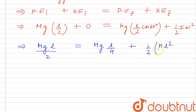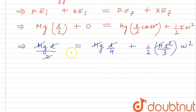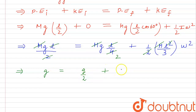The moment of inertia I equals ML²/3. So: MgL/2 = MgL/4 + ½ × (ML²/3) × ω². M and M cancel out, L cancels as well. We get: G/2 = G/4 + ω²L/6, which simplifies to G/4 = ω²L/6, giving G equal to G/2 plus ω² × L/3.